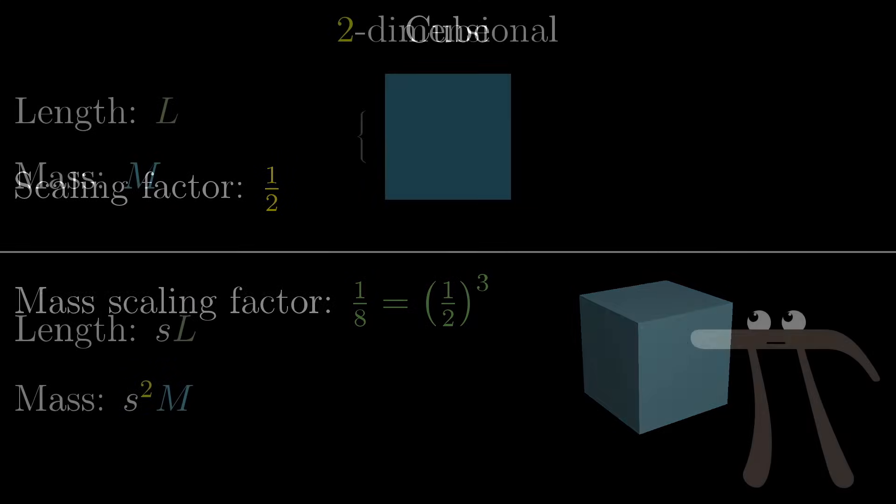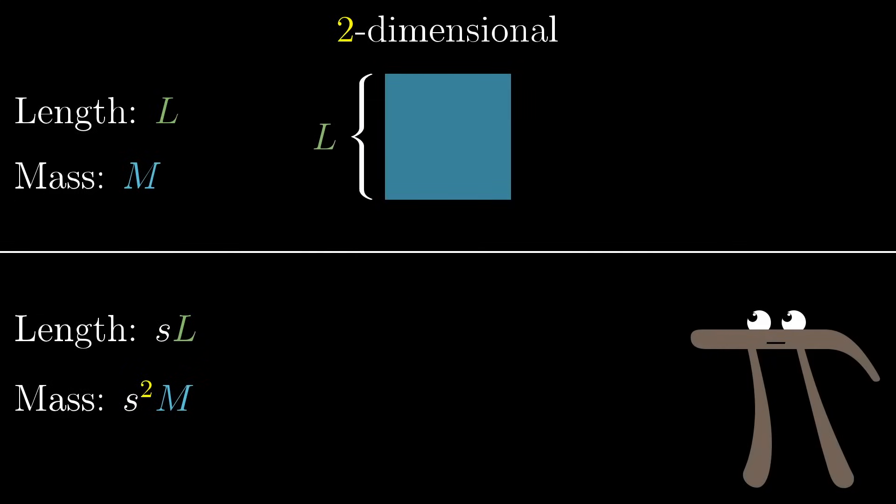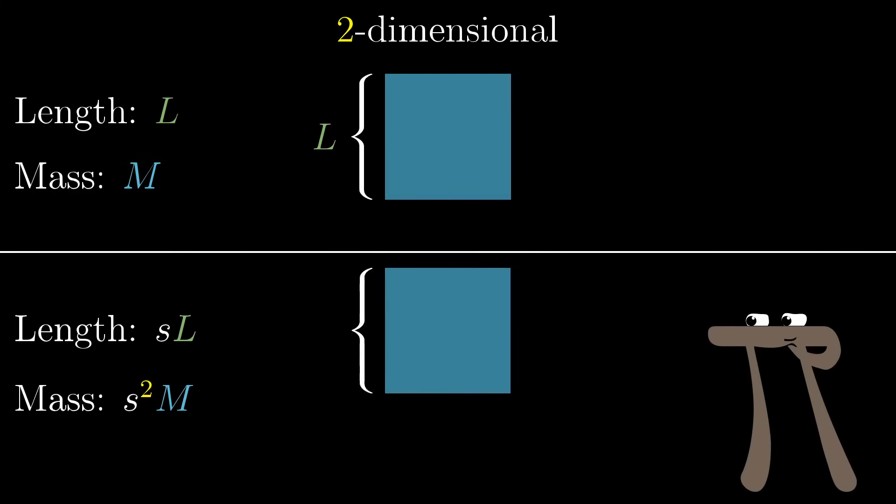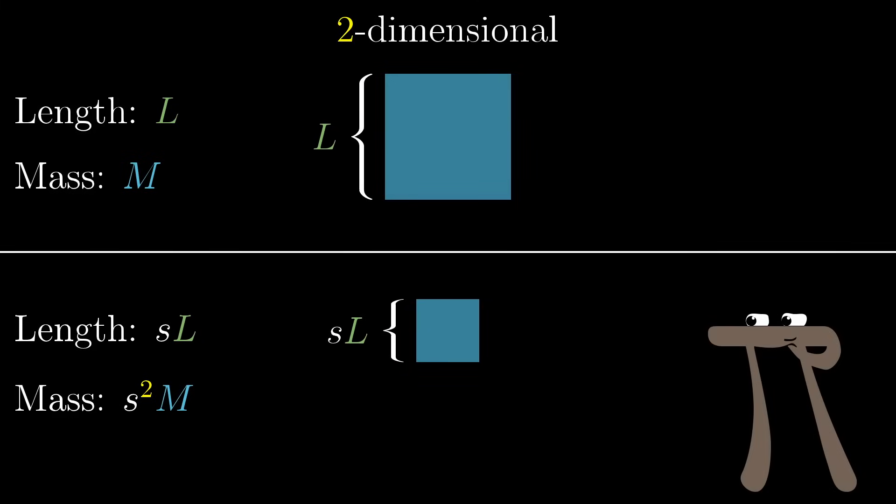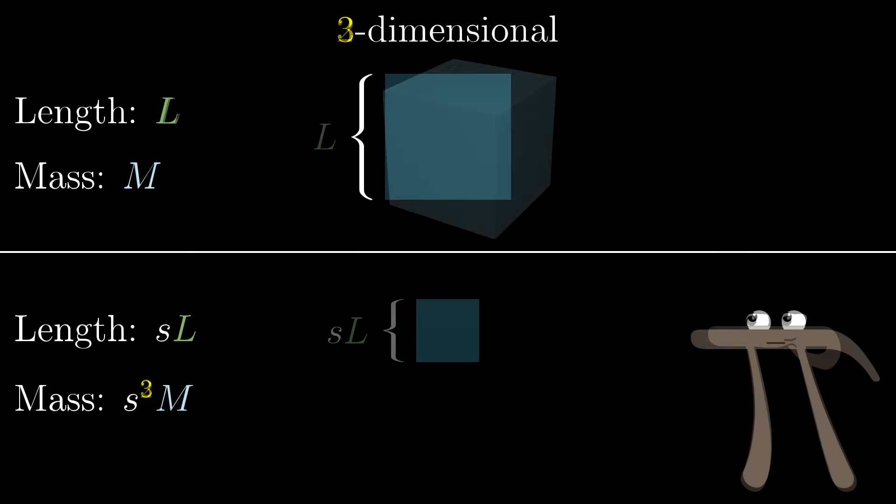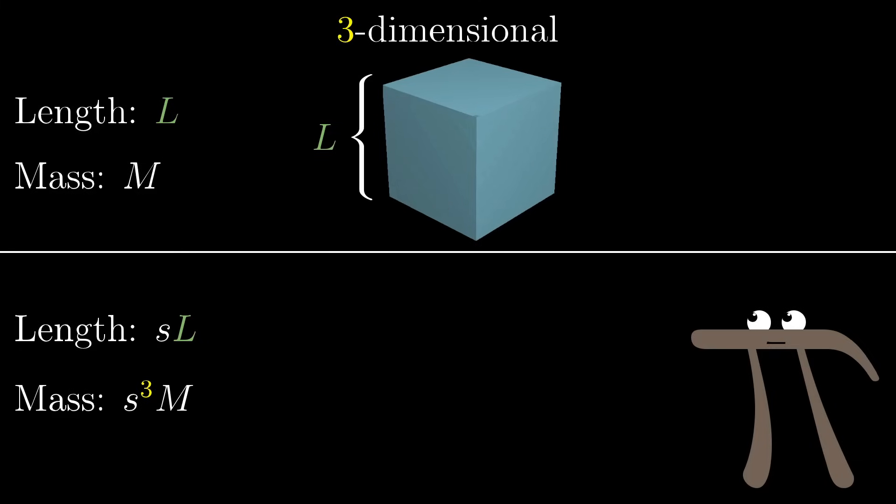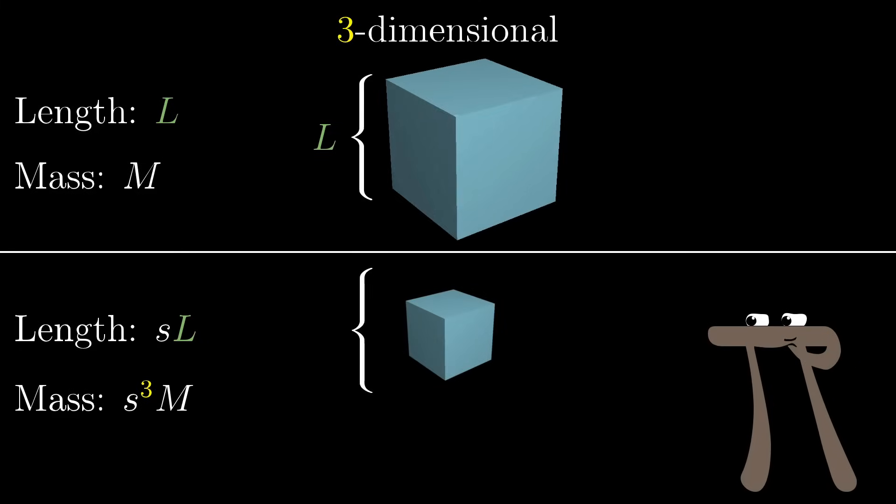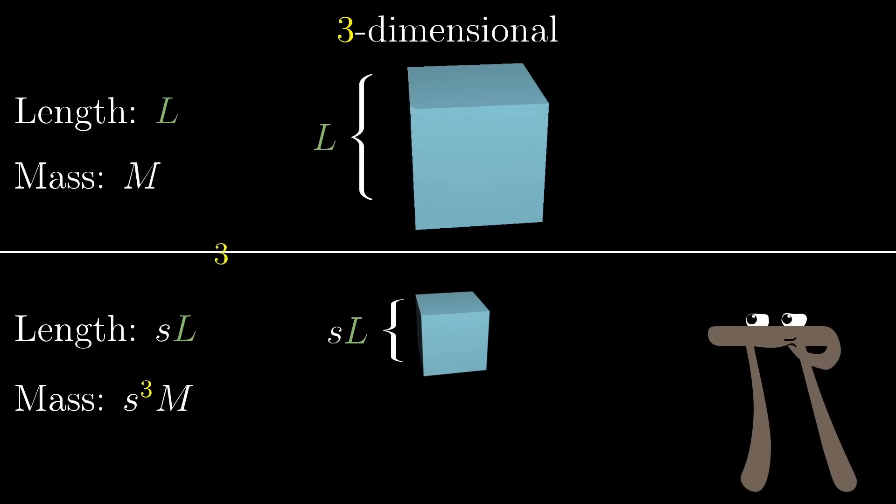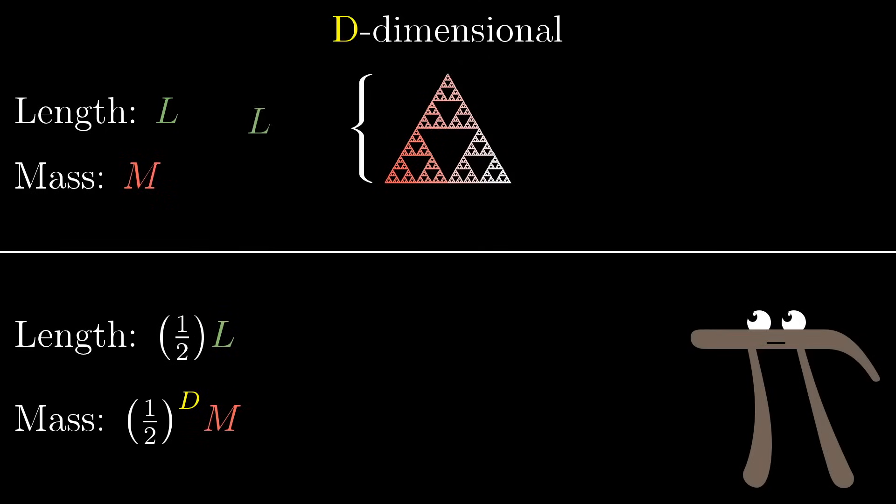And what's more, you could say that what it means for a shape to be, for example, two-dimensional, what puts the two in two-dimensional is that when you scale it by some factor, its mass is scaled by that factor raised to the second power. And maybe what it means for a shape to be three-dimensional is that when you scale it by some factor, the mass is scaled by the third power of that factor.